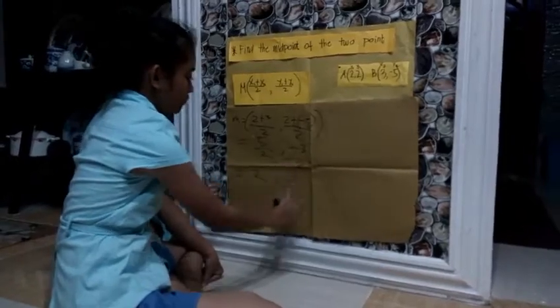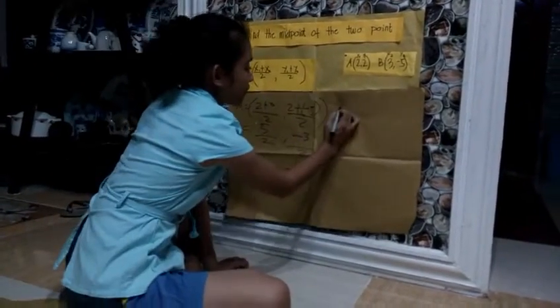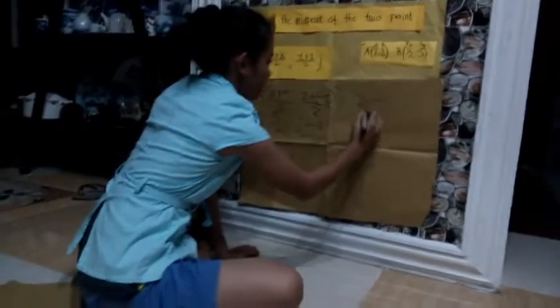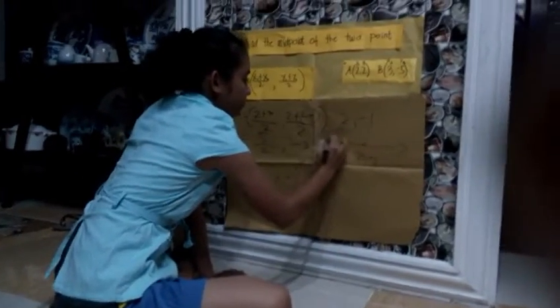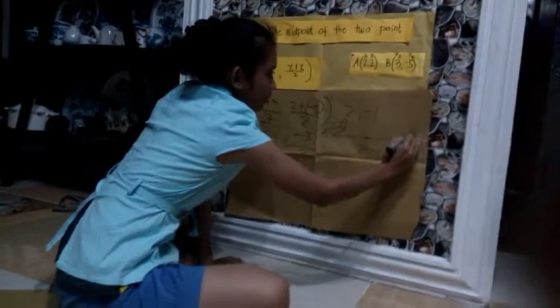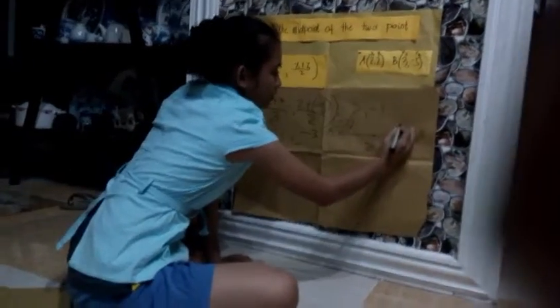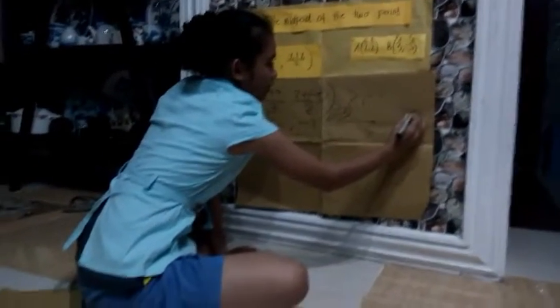2 plus 3 divided by 2 equals 2.5, and negative 3 divided by 2 is negative 1.5. So the midpoint is (2.5, negative 1.5) of the two points A(2, 2) and B(3, -5).